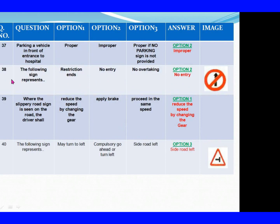Question 37: Parking a vehicle in front of the entrance to a hospital. Option 1: Proper. Option 2: Improper. Option 3: Proper if no parking sign is not provided. The right answer is Option 2: Improper. Question 38: The following sign represents. Option 1: Restriction ends. Option 2: No entry. Option 3: No overtaking. The right answer is Option 2: No entry.